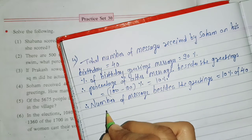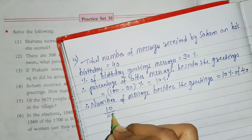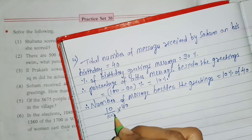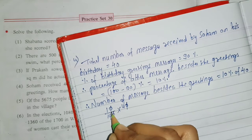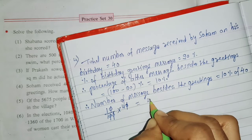So we write 10 upon 100 multiplied by 40. We cancel the zeros — 10 and 100 simplify — giving us 4.